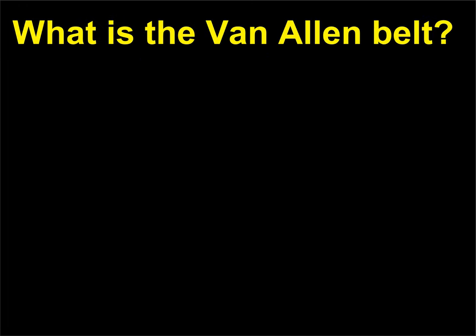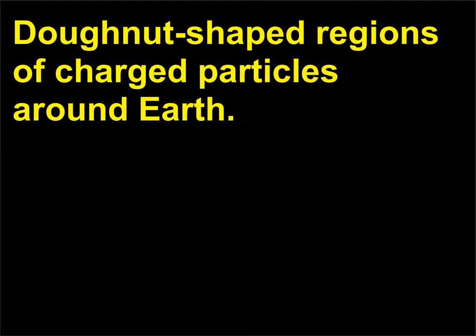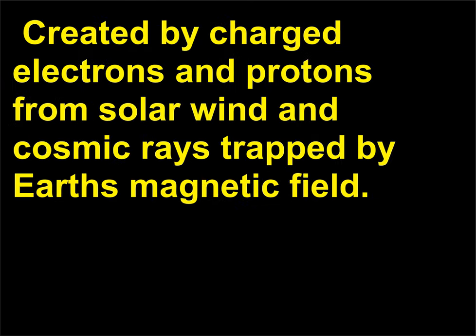What is the Van Allen belt? Donut-shaped regions of charged particles around Earth. Created by charged electrons and protons from solar wind and cosmic rays trapped by Earth's magnetic field.